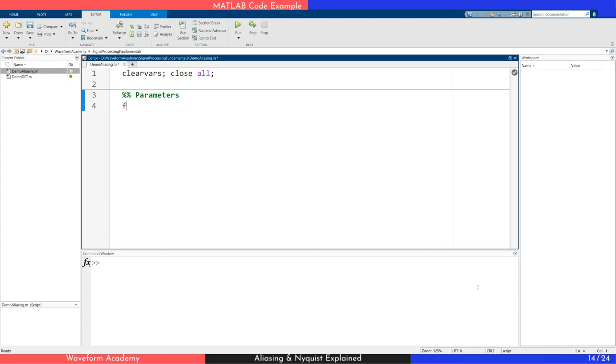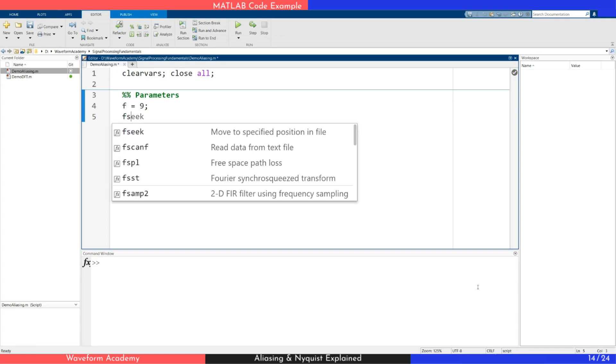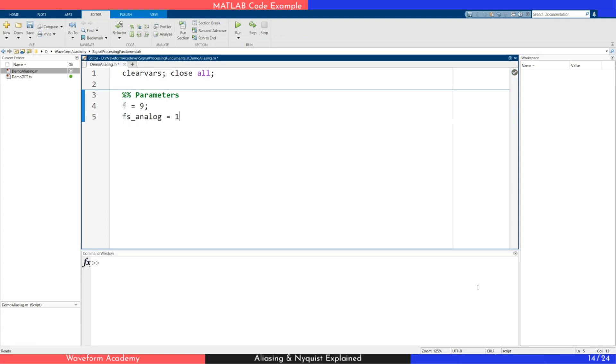First, we set the frequency of the sine wave we want to generate. Then, we define the pseudo-analog sampling frequency, which determines how finely we represent the continuous signal. We set it to 100 kHz, assuming it's high enough to treat the signal as continuous. Lastly, we set the actual sampling frequency to 10 Hz, which is too low to properly capture a 9 Hz signal. This will allow us to observe the aliasing effect in action.